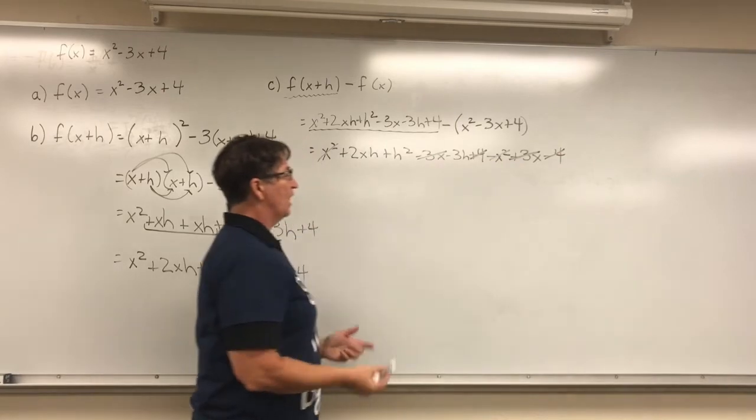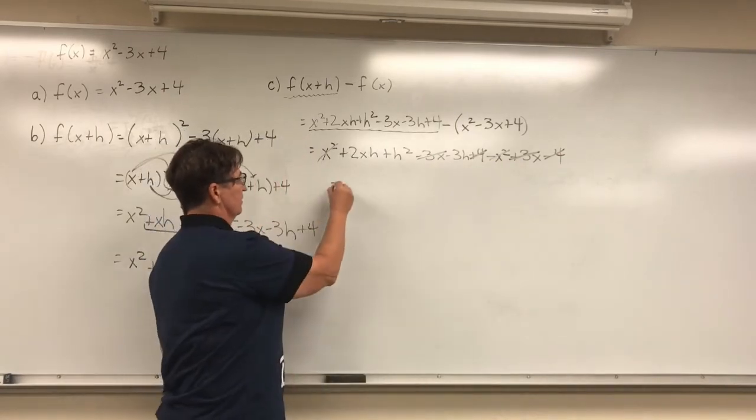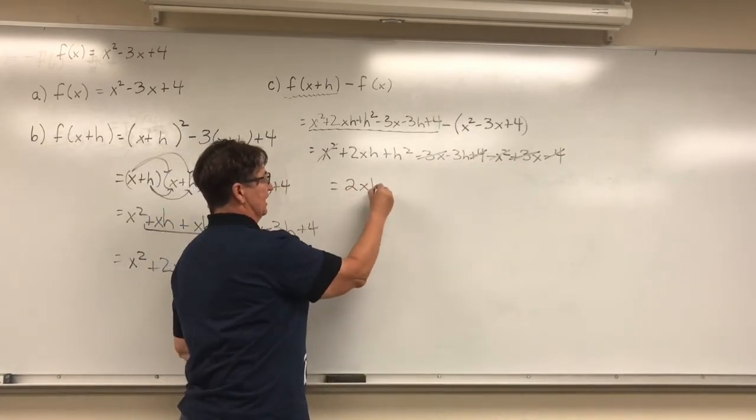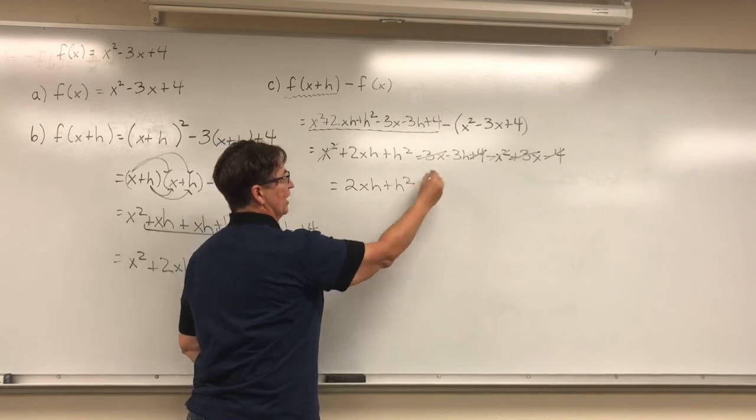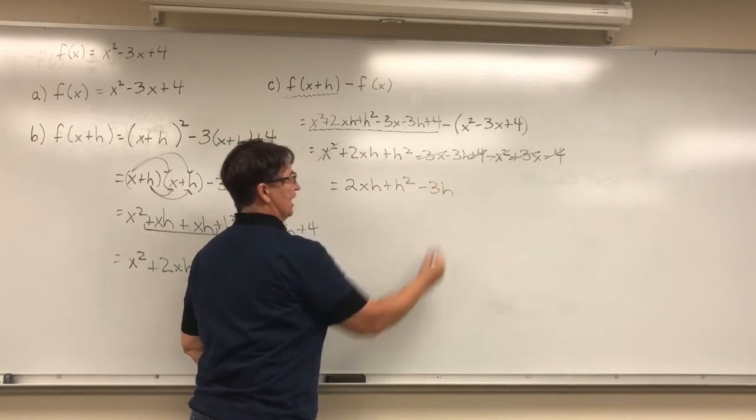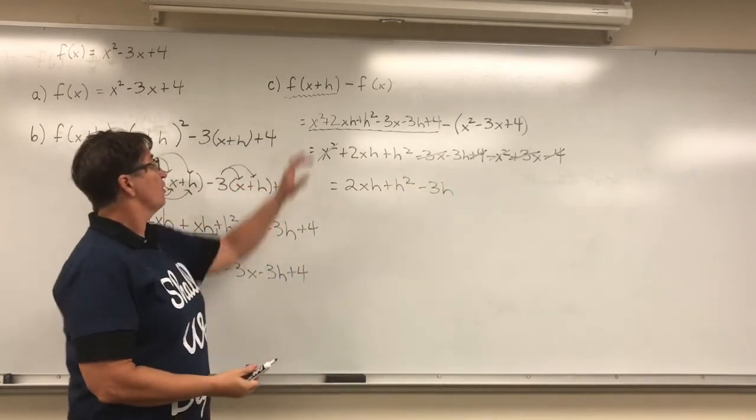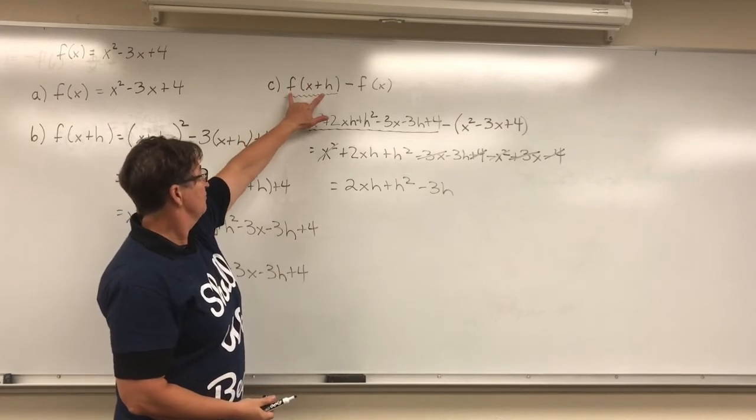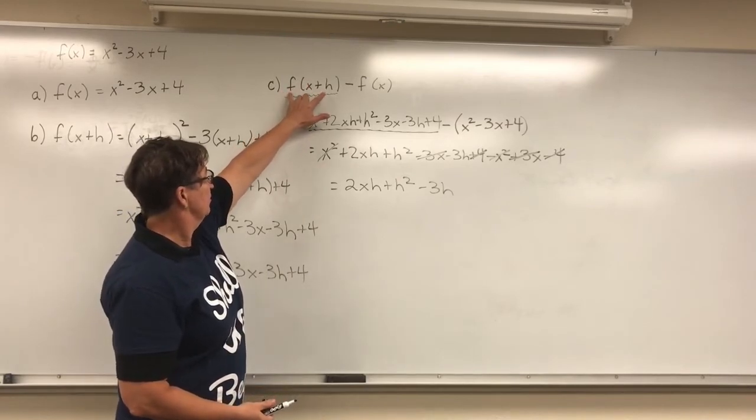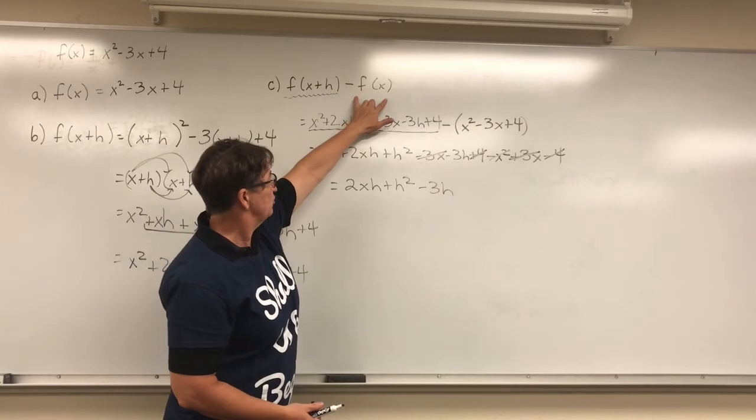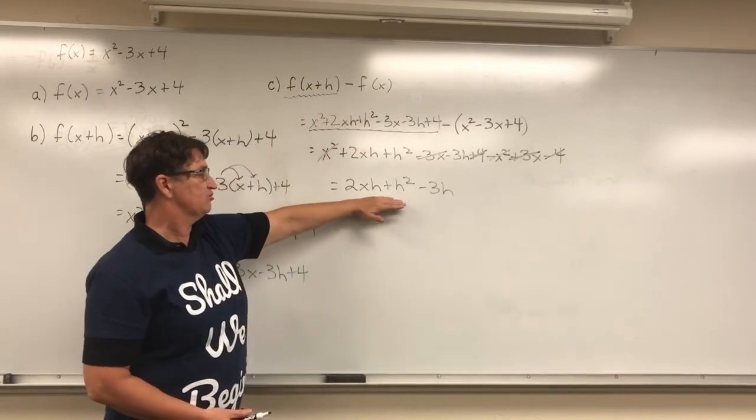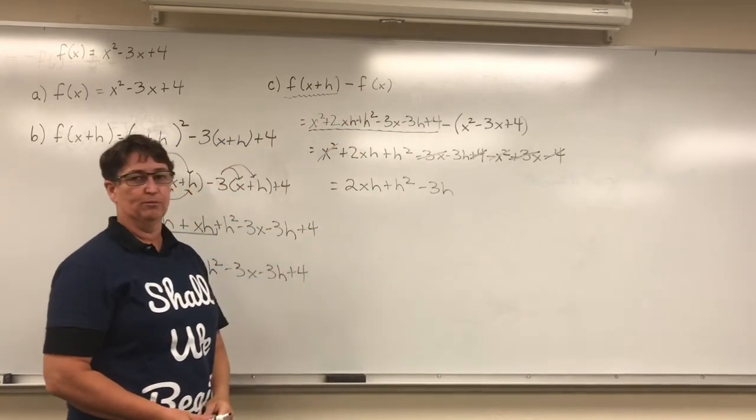So I'm left with 2xh plus h squared minus 3h. So this function here minus our original function gives us 2xh plus h squared minus 3h.